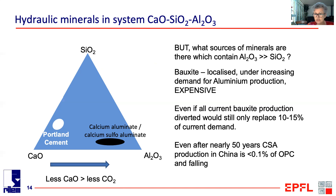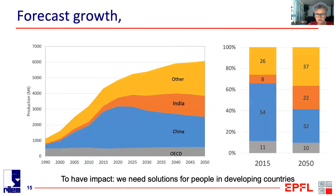After nearly 50 years of producing calcium sulfoaluminate cements in China, these represent less than one tenth of 1% of the production of Portland cement. And this proportion is actually going down because of the expense and the technical difficulties.